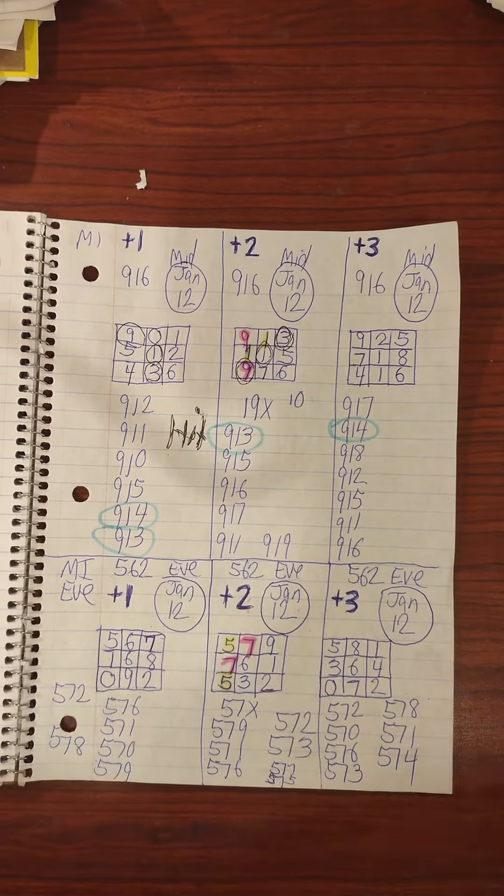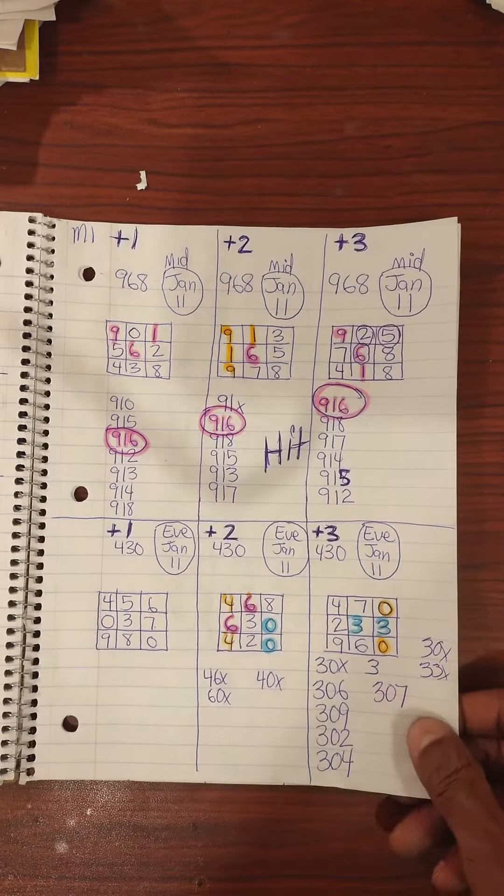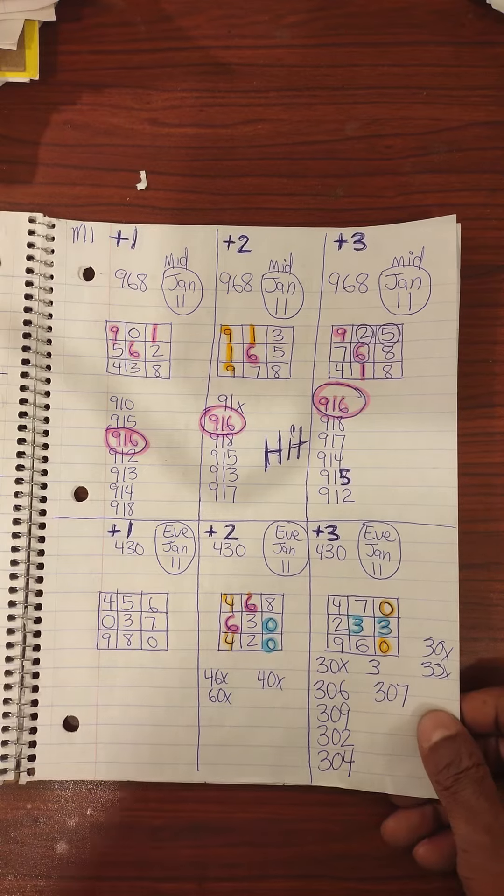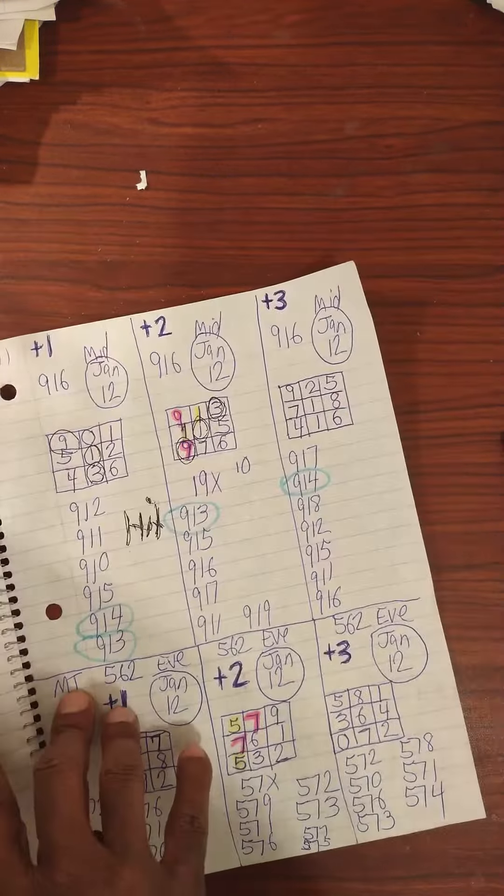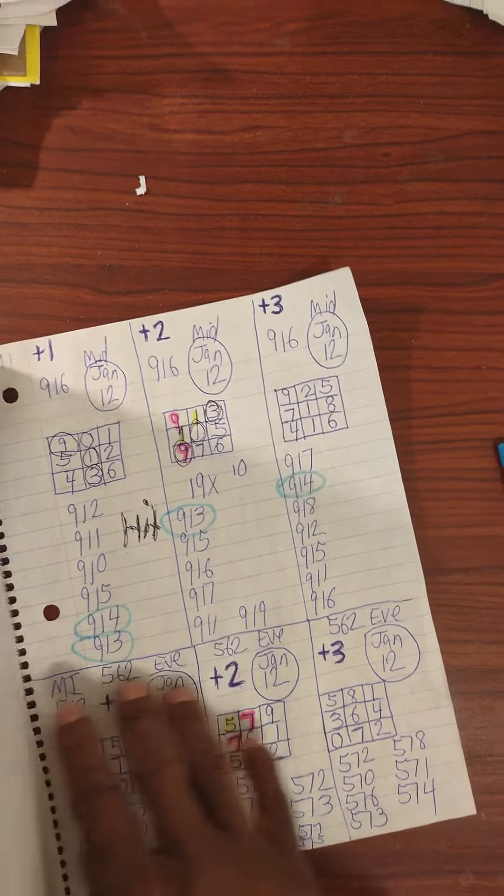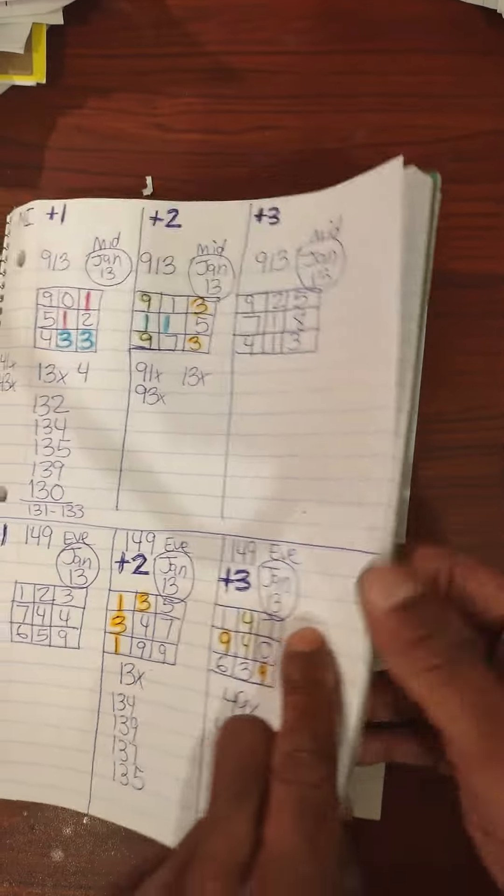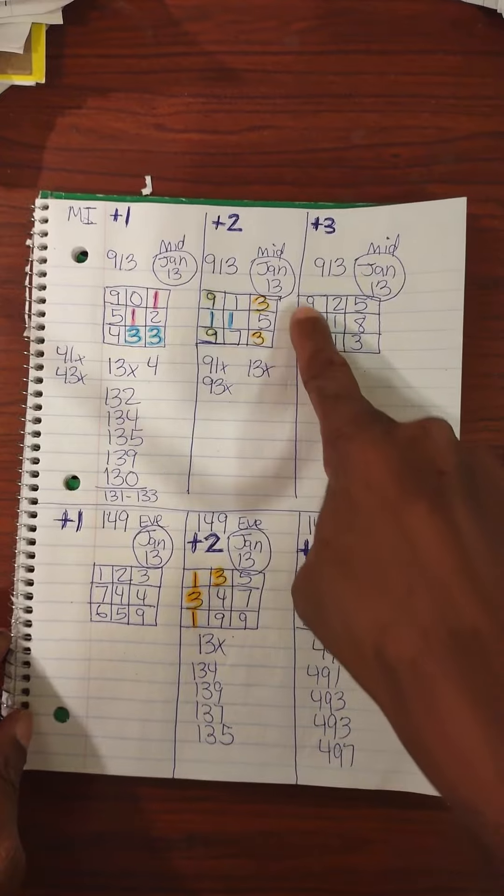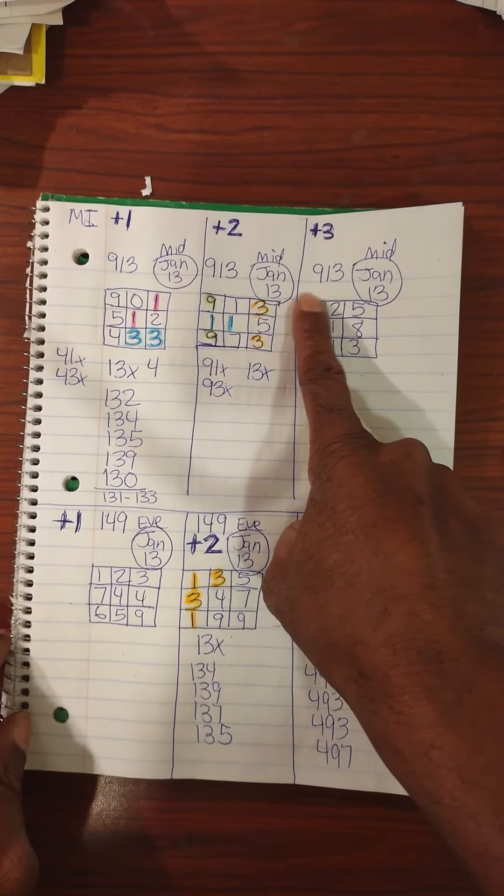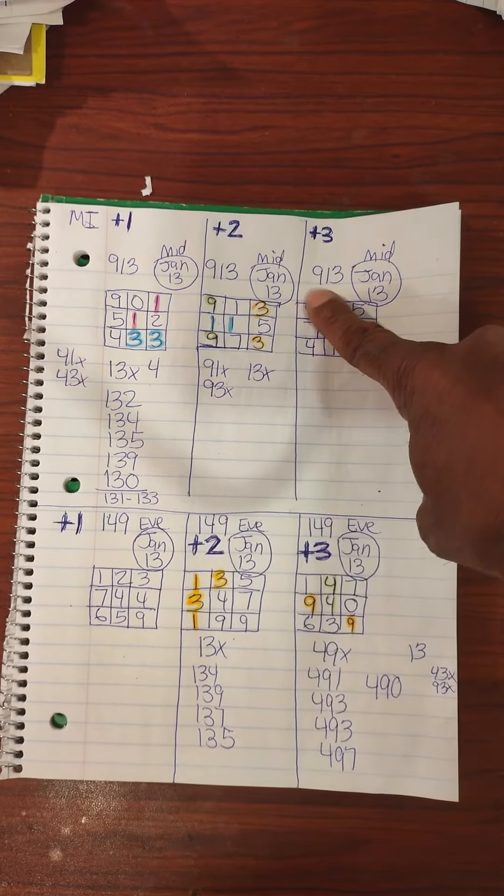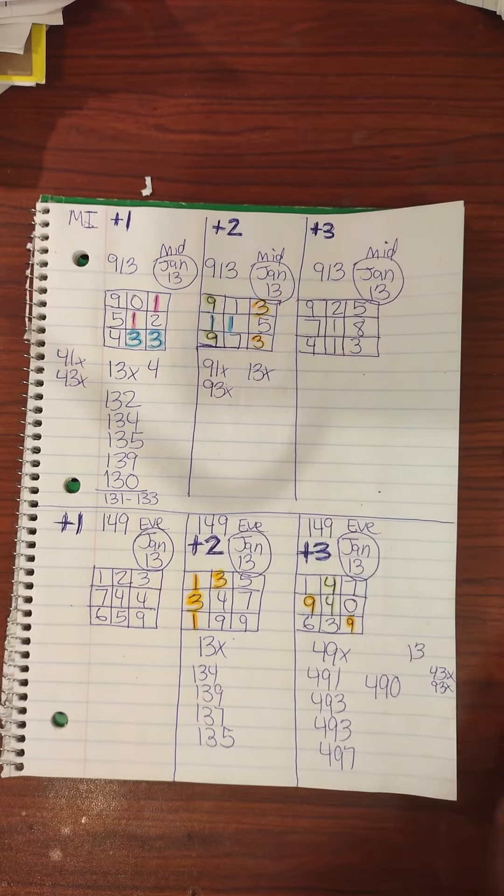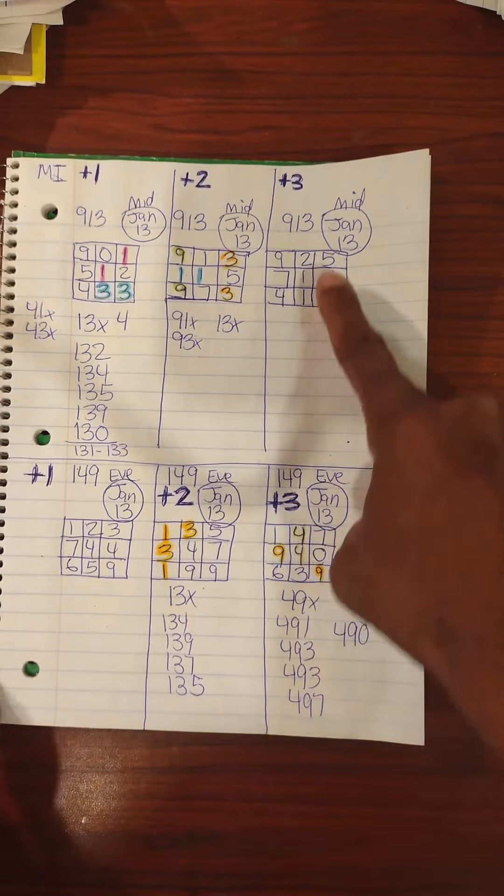1-9 pair, 1-9-4. Look, on the 13th rundown. We had, look at the 13th rundown.